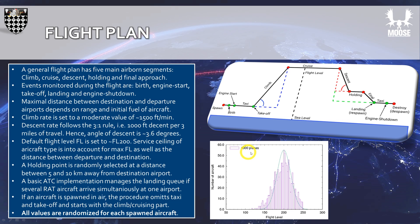If you spawned 1000 planes, you would see that most aircraft travel at flight level 200, but other values are possible — they are just less likely the further away you get from the mean. Once the aircraft has finished its cruise phase, it will go into a descent at around 3.6 degrees, and will be guided to a holding point which is a random point 5 to 10 kilometers away from the final destination airport.